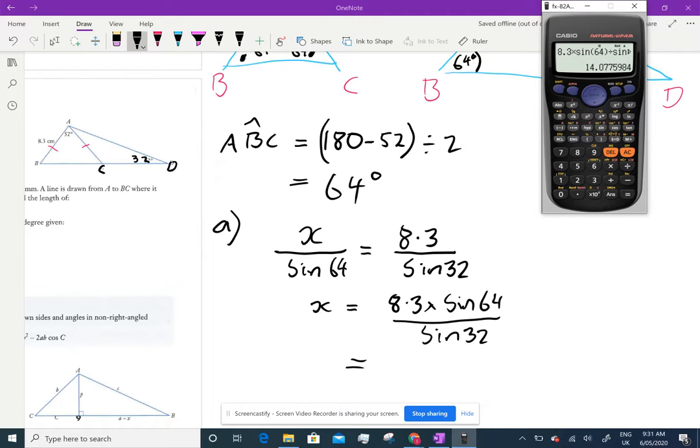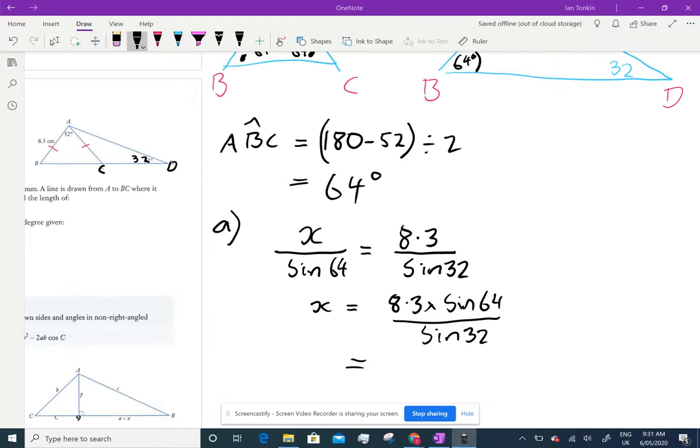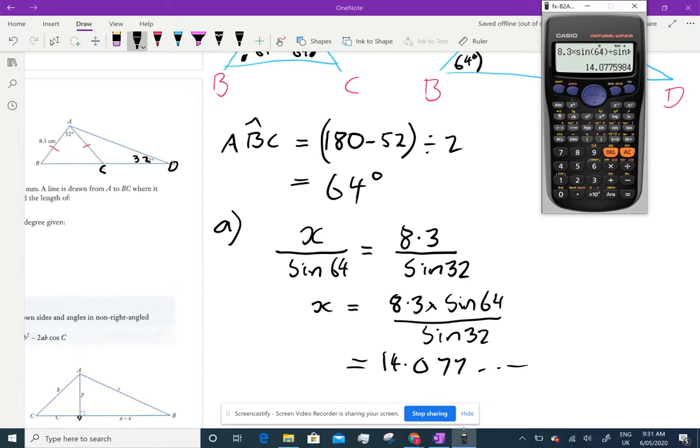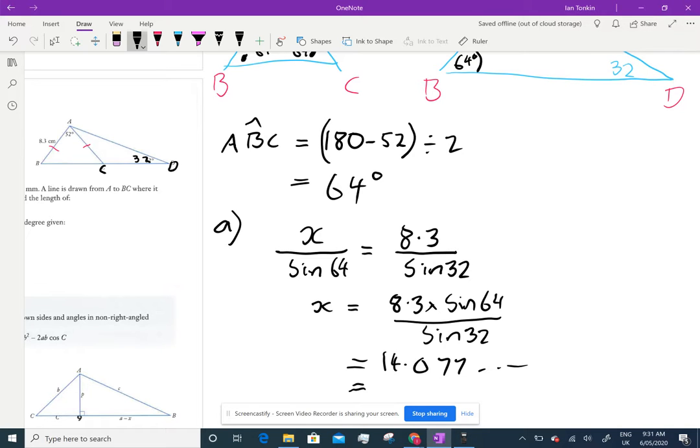Calculator work now: 8.3 times sine 64 divided by sine 32. That's 14. I'm just going to check that's right on my other computer. So 14.077 dot dot dot, which equals 14.1 centimeters.